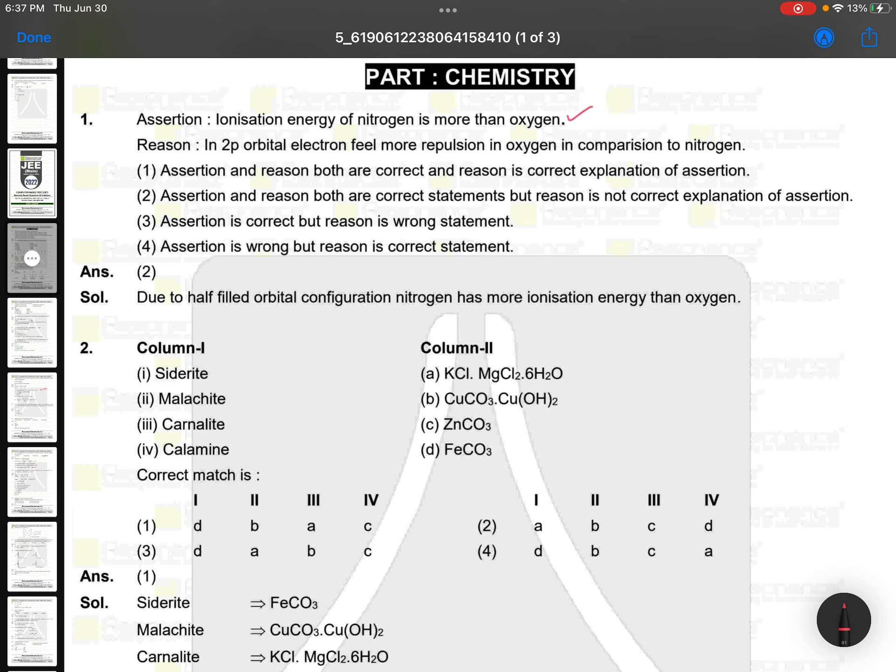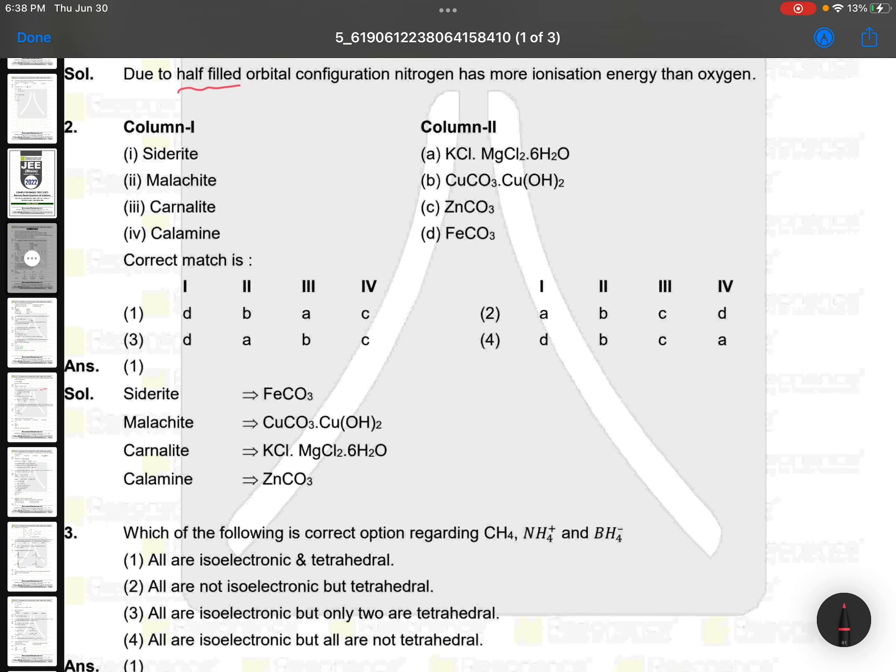In 2p orbital, electrons feel more repulsion in oxygen in comparison to nitrogen? No, this is not the right reason. The right reason is because of half-filled orbital. So both statements are correct but not correct explanation.